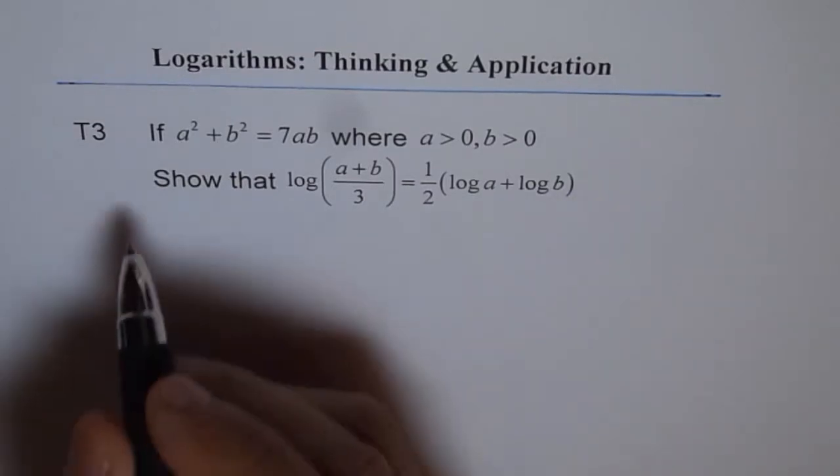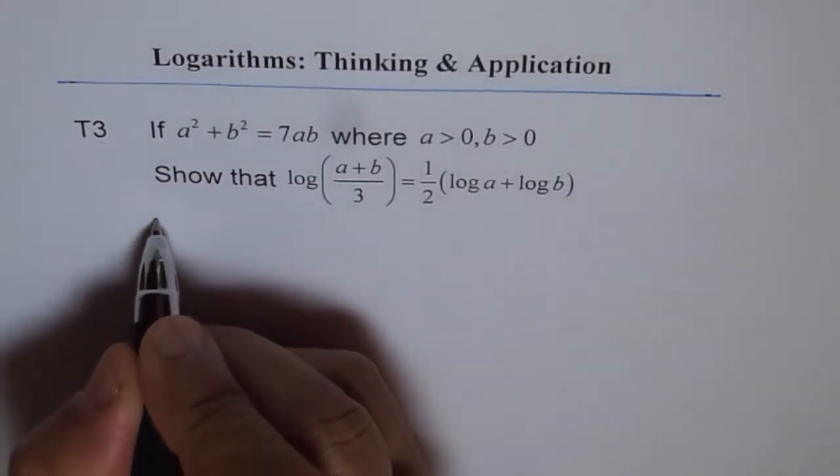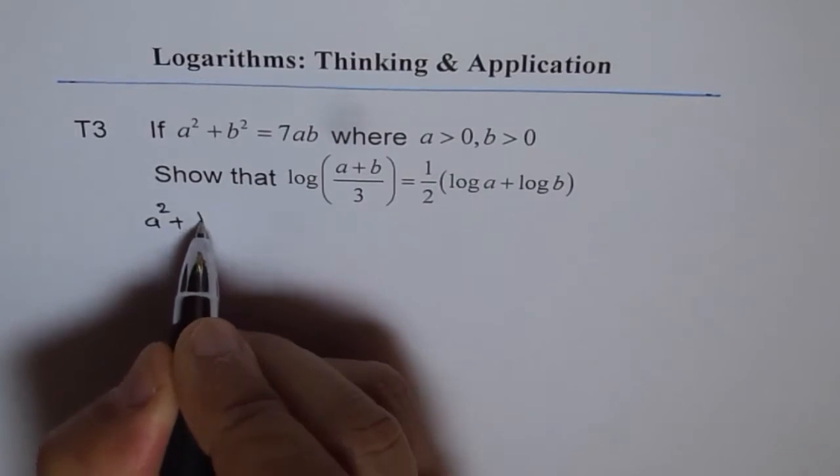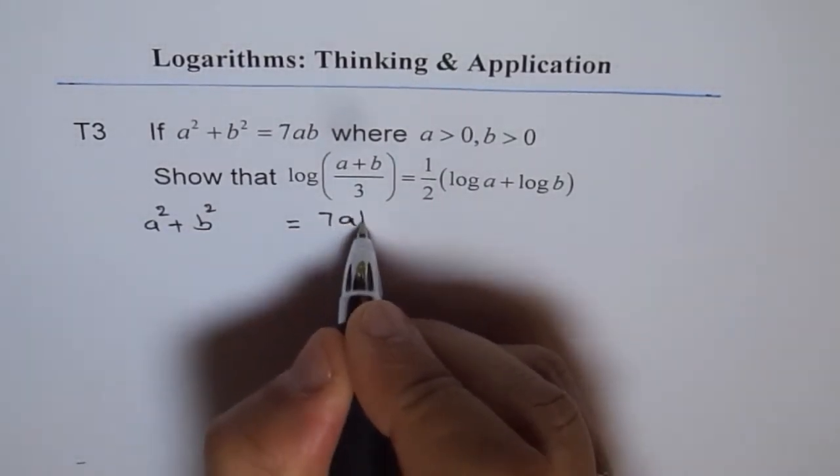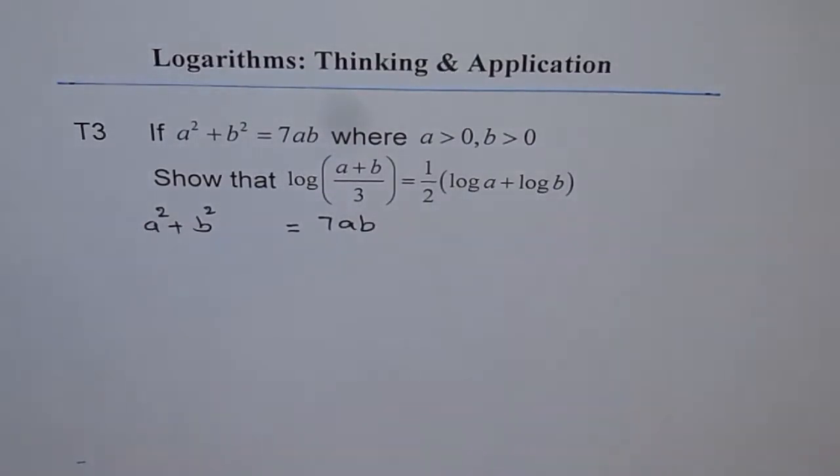Here is my solution. So we'll write a square plus b square equals to 7ab. And you understand why I have left this space in between. It is for making it a perfect square.